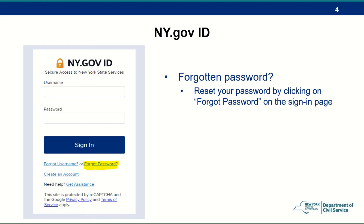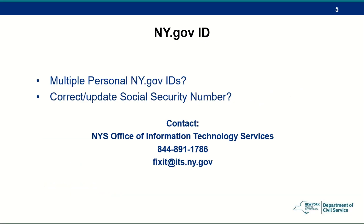If you happen to forget your password, you can utilize the password reset function on the login page. Simply click on Forgot Password. If you have multiple NY.gov IDs or if you applied or tried to apply for a New York State Civil Service exam and need to correct or update the Social Security number associated with your NY.gov account, you will need to contact the New York State Office of Information Technology Services Service Desk directly at 844-891, or via email at fixit@its.ny.gov to open a ticket to resolve this request.